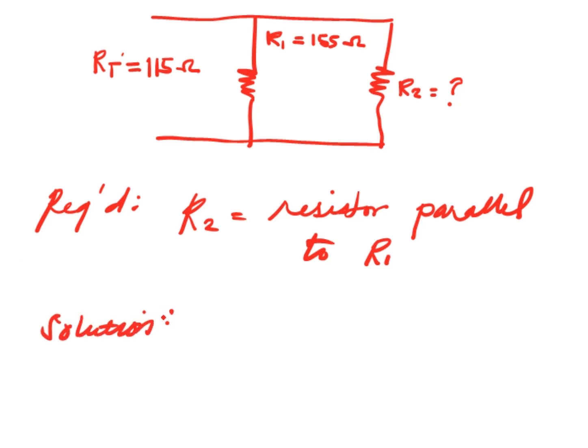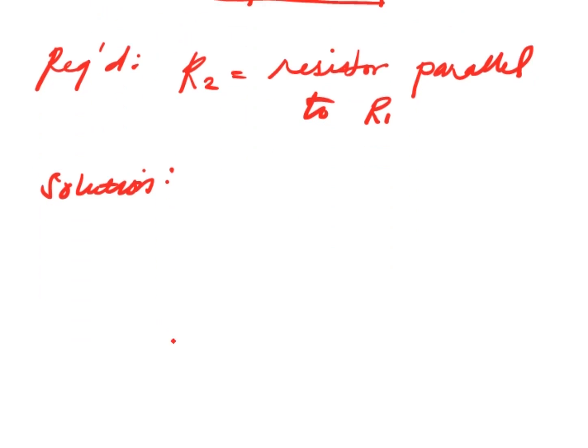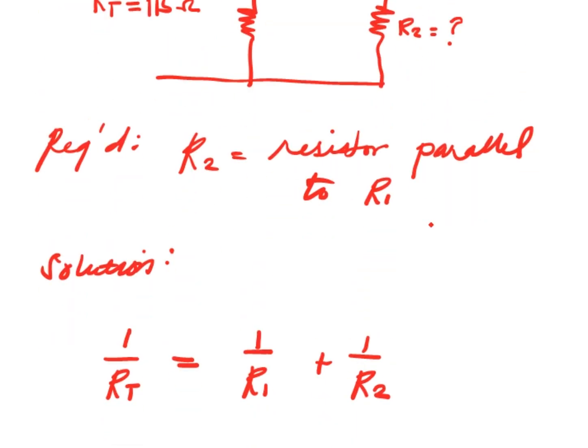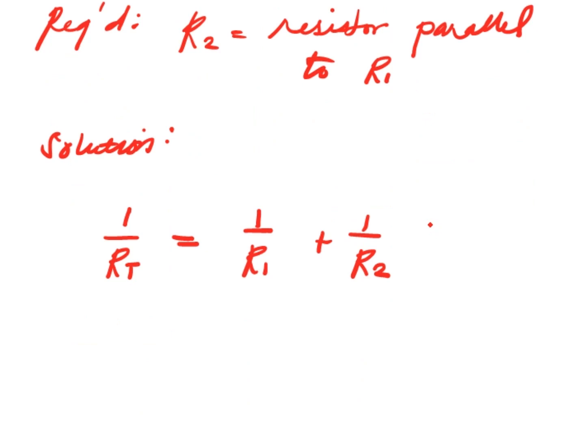For parallel circuits we have 1 over R total equals 1 over R1 plus 1 over R2, and so on. It depends on how many resistors you have in the circuit. In this circuit we only have two resistors, so the total resistance is just the reciprocal of resistor one and resistor two.